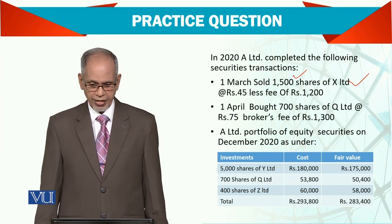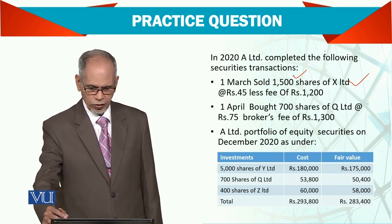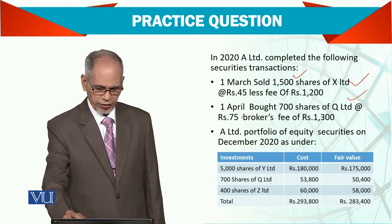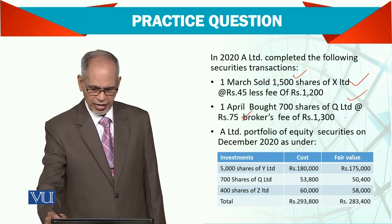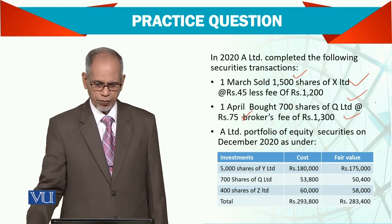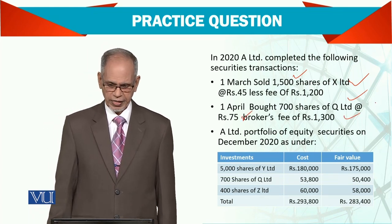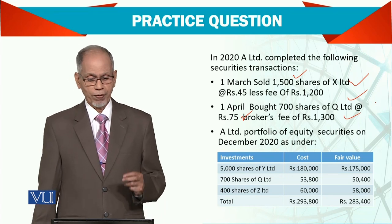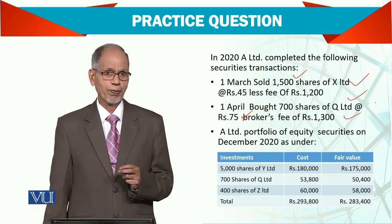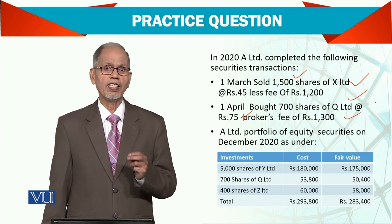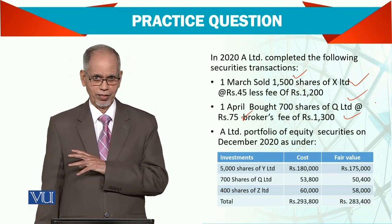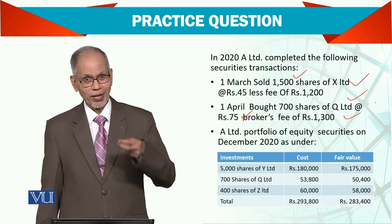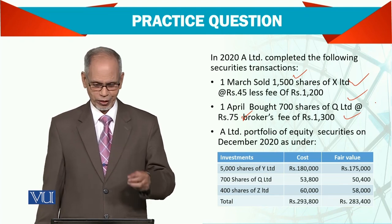Then they bought 700 shares of Q Limited at a rate of 75, with a brokerage fee of 1300. Interesting thing — when you are buying, the fee is going to be added to your cost, whereas when selling, the fee is deducted from proceeds.